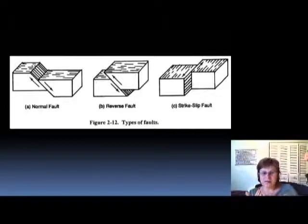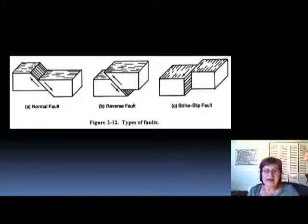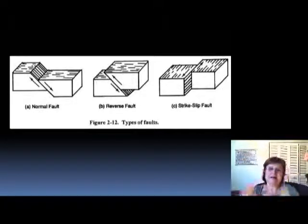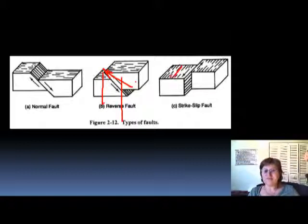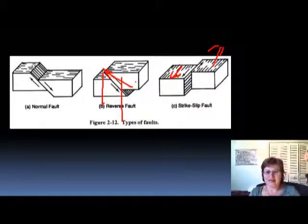Altogether we have three kinds of fault: the normal fault, where the hanging wall goes down, showing relative lengthening with a missing layer; the reverse fault, where the hanging wall goes up and you have repeating layers; and the strike-slip fault, where the blocks slide next to each other horizontally.